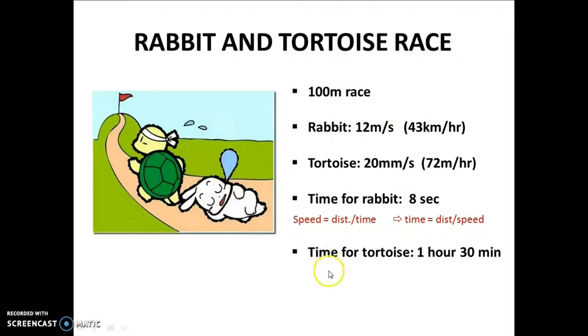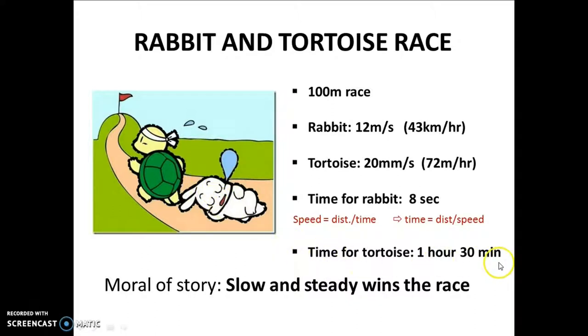Similarly, the time taken by the tortoise to cover this 100 metres track is about 1 hour 30 minutes. Thus, we can all expect the rabbit to outcome the tortoise by about 1 and a half hour. But despite that, the tortoise wins the race. And the moral of the story, we all know: slow and steady wins the race.